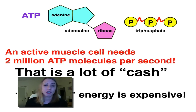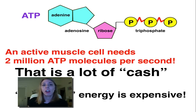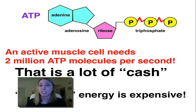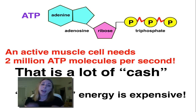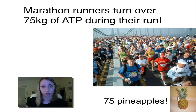So ATP is very cool — it has some really cool facts associated with it. An average active muscle cell actually needs two million ATP molecules per second to function. That is a lot of cellular cash, as we could say. Two million ATP molecules is very expensive to operate that active muscle cell.